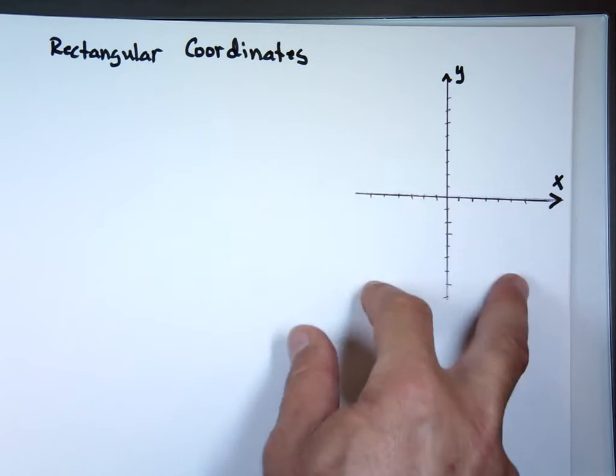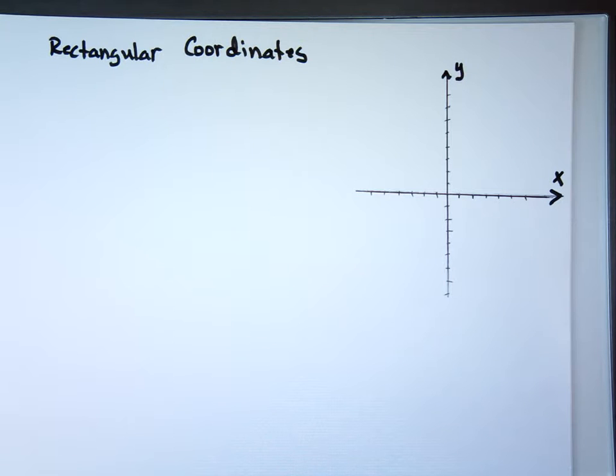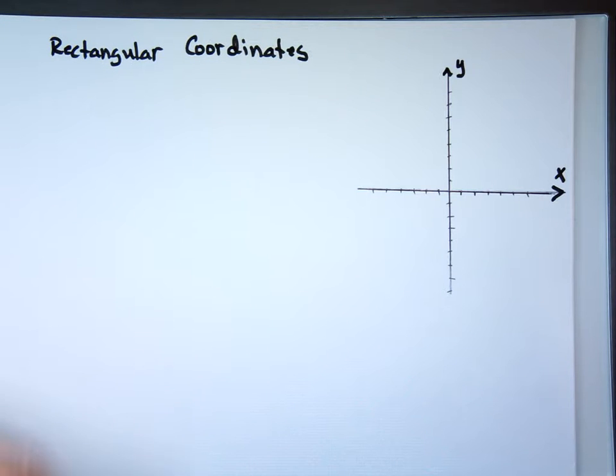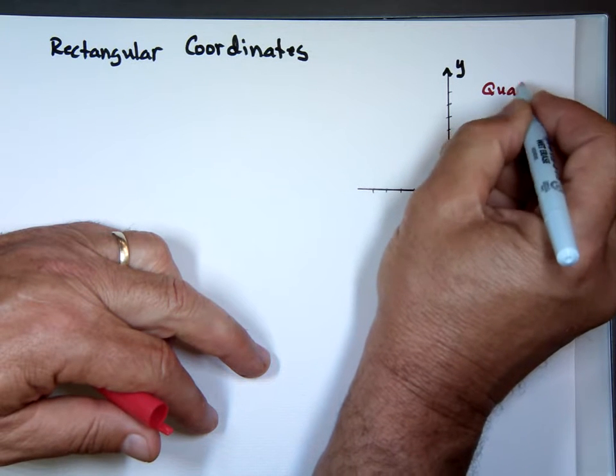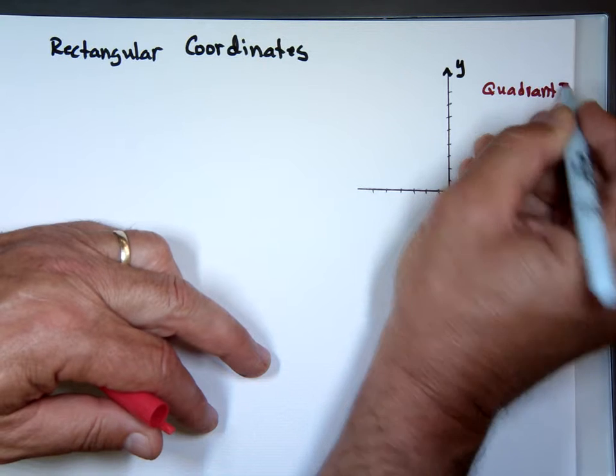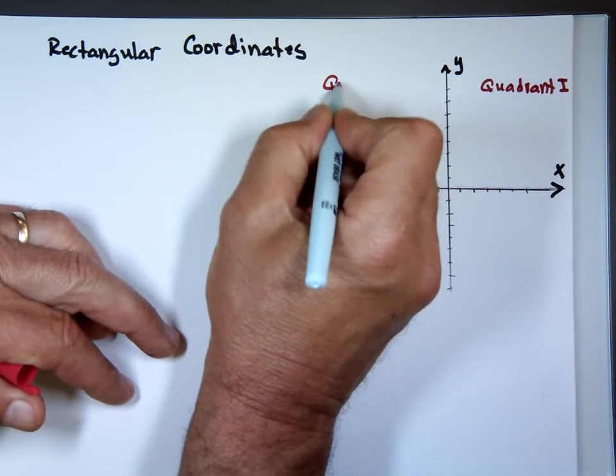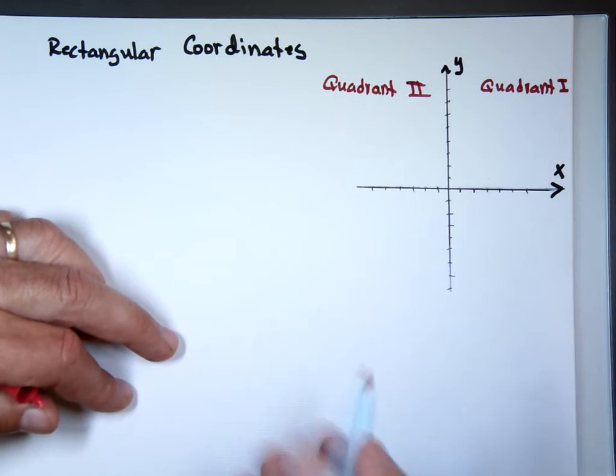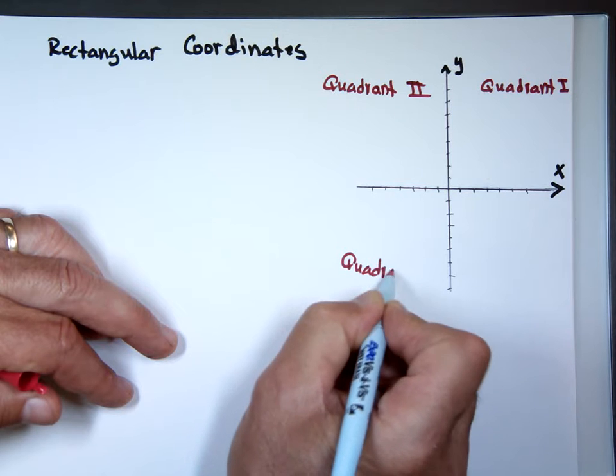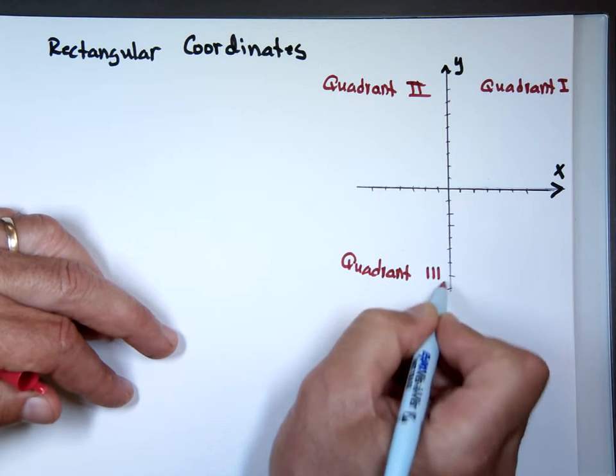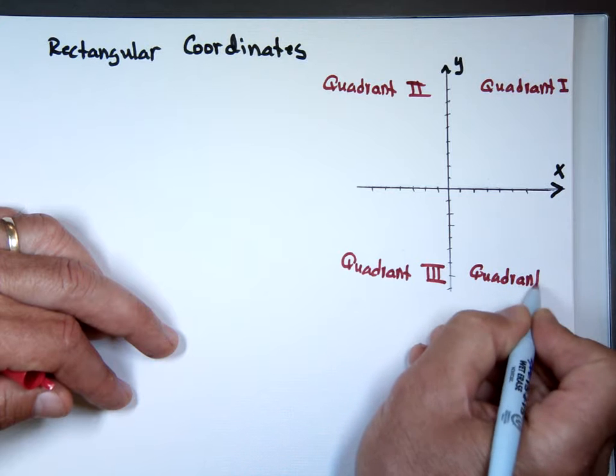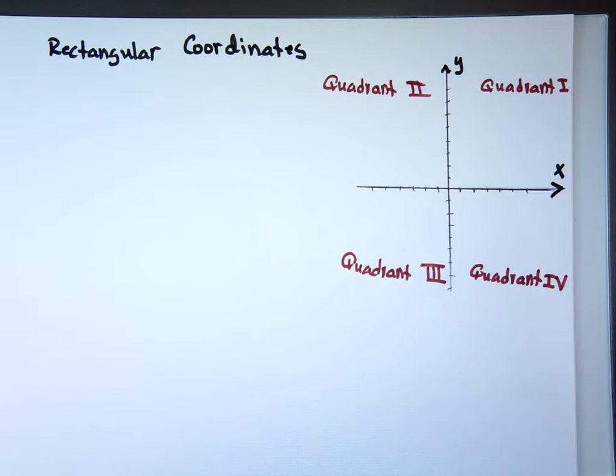First you can see we have four pieces to that. Rectangular coordinates, we call them quadrants. So this is quadrant 1. Maybe I'll label it. Quadrant 1, 1 is I. You don't write the number 1. This is quadrant 2. This is quadrant 3. And the last one is quadrant what? 4, and 4 is IV. Quadrant 1, quadrant 2, quadrant 3, quadrant 4.